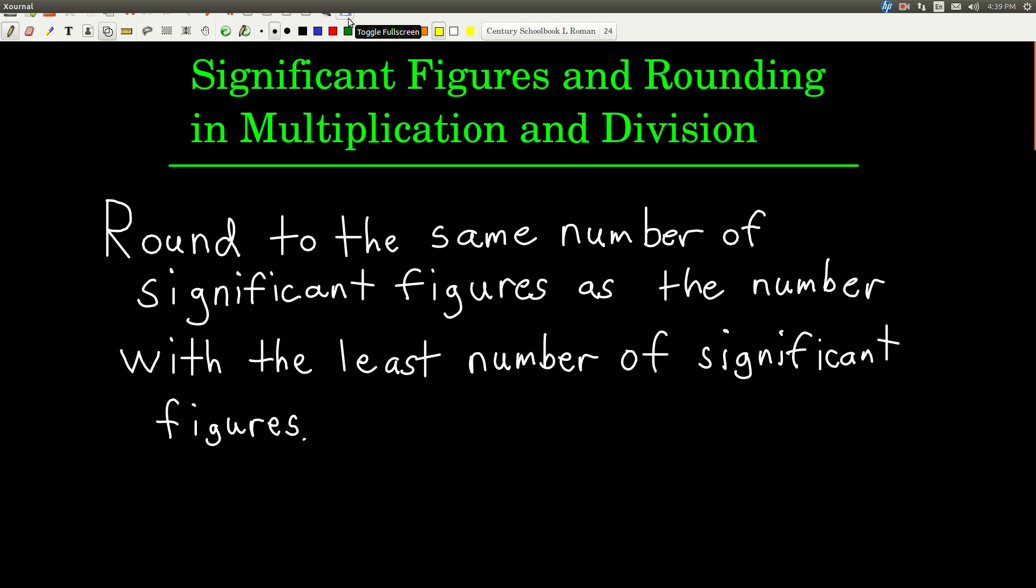In this video, we're going to talk about significant figures and rounding when we're doing multiplication and division. So here's the rule, pretty simple. You round to the same number of significant figures as the number that you're operating on that has the least number of significant figures.